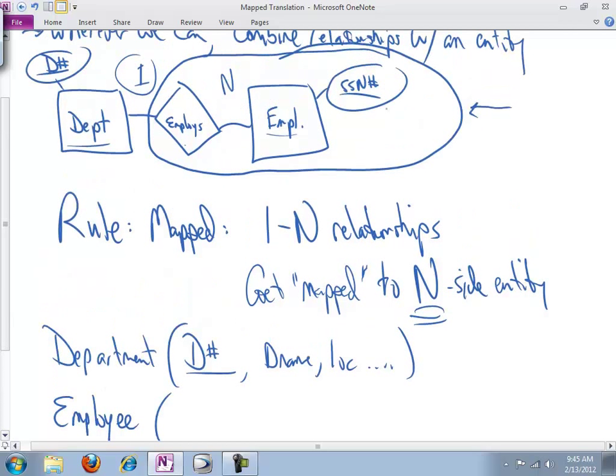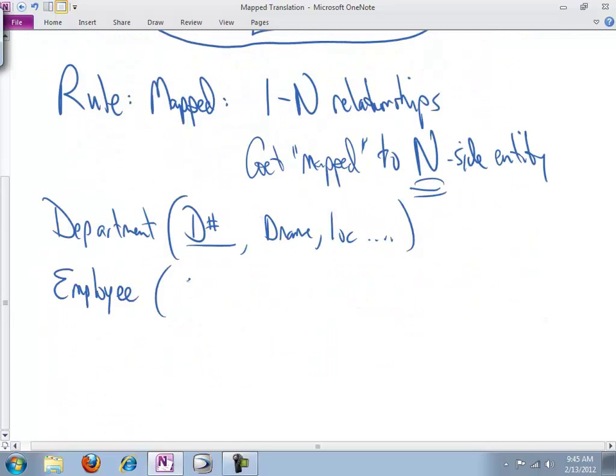And, you know, the employee table has primary key, social security number. So SSN is the primary key, and then, you know, name and salary and all those other things.